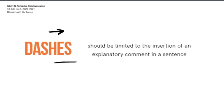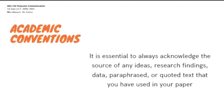The next element is the most important aspect of academic writing, which is citing sources in the body of your paper and providing a list of references as either footnotes or endnotes. When considering academic conventions, it is essential to always acknowledge the source of any ideas, research findings, data, paraphrased or quoted texts that you have used in your paper as a defense against allegation of plagiarism. Plagiarism is presenting someone else's work or ideas as your own, with or without their consent, by incorporating it into your work without full acknowledgement.